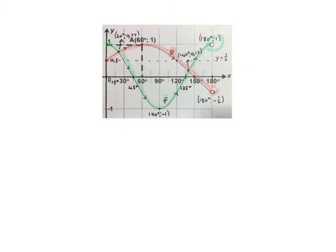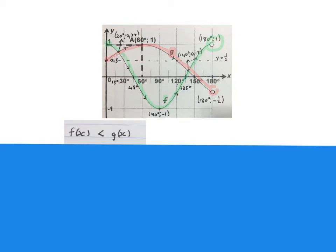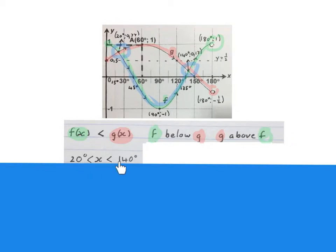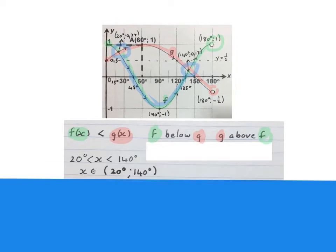Now we're going to do interpretation between the two graphs. The g graph is red and the f graph is green. They start on the y-axis included and are not included at 180 degrees. They meet at 20 degrees and at 140 degrees. The question asks where is f of x smaller than g of x — where is the green graph below the red graph. That is the blue highlighted part: x is bigger than 20 degrees and x is smaller than 140 degrees. You may also write it in interval notation.